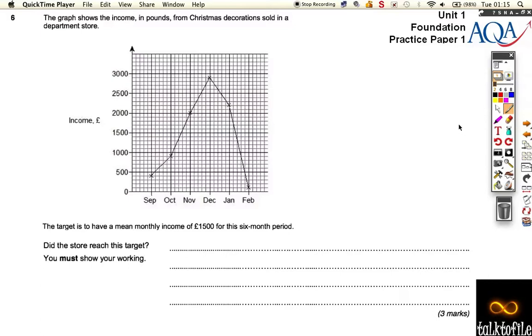Let's now look at question 6. We've got a nice line graph going on here, talking about the income in pounds of Christmas decorations.